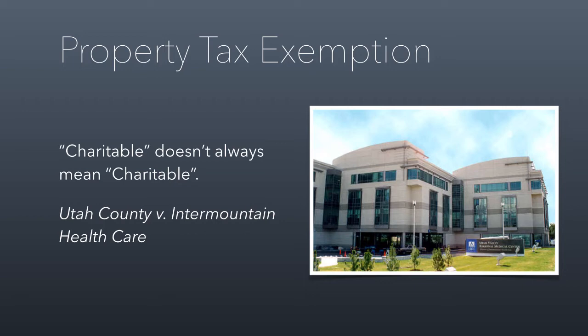That doesn't mean they just got away with something — they have to continue providing charity care at amounts higher than they would be paying in property taxes; that's how the state tax commission justifies it. On the Intermountain Healthcare website you can find their community support report produced every year, detailing all public services they provide. In 2011 they provided $175 million in charitable assistance to Utah residents. This case, Utah County versus Intermountain Healthcare, became nationally important and was a justification for states across the country to question charitable tax exemption, ignoring the federal definition and adopting their own.